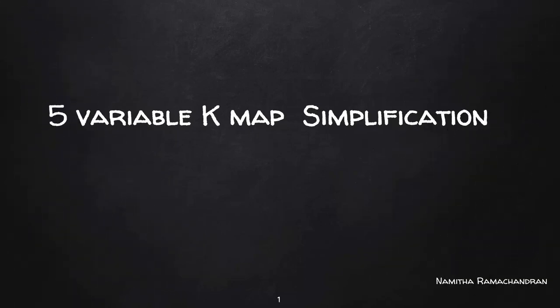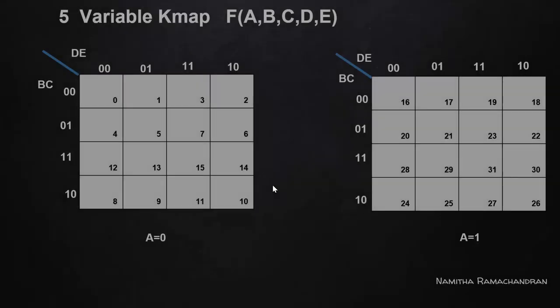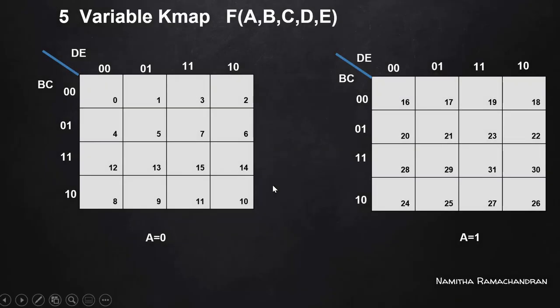Welcome back everyone. In this video, we will discuss the simplification of a 5-variable KMAP. In a 5-variable KMAP, a total of 2 to the power 5, that is 32 different cells, are possible.